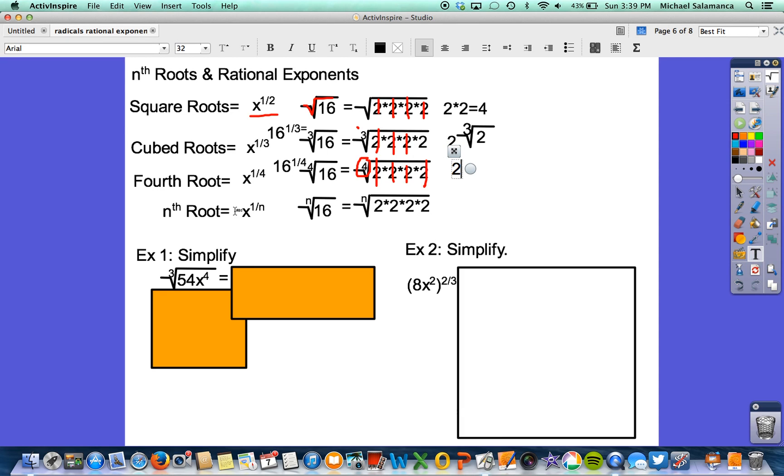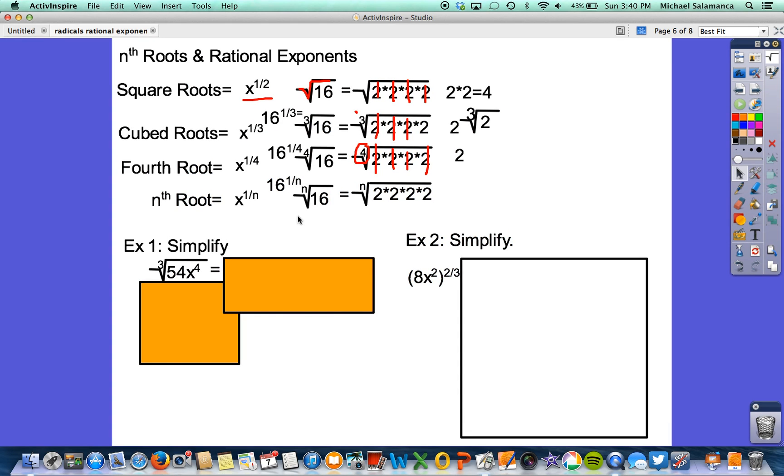So the nth root, or x to the 1 divided by n power, that's again equivalent here to writing 16 to the 1 divided by n power. And again, that's equivalent to the nth root of 16. So I want to make sure you notice how we're navigating between a rational exponent and the root. Because we don't know what this n is for that example, we can't actually solve this, so we're going to say we're done.